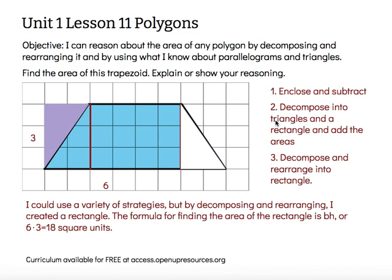As noted, I could use a variety of strategies, but by decomposing and rearranging I created a rectangle. The formula for finding the area of the rectangle is base times height, or six times three, which is 18 square units. The objective says: I can reason about the area of any polygon by decomposing and rearranging it, and by using what I know about parallelograms and triangles. Thanks for watching!